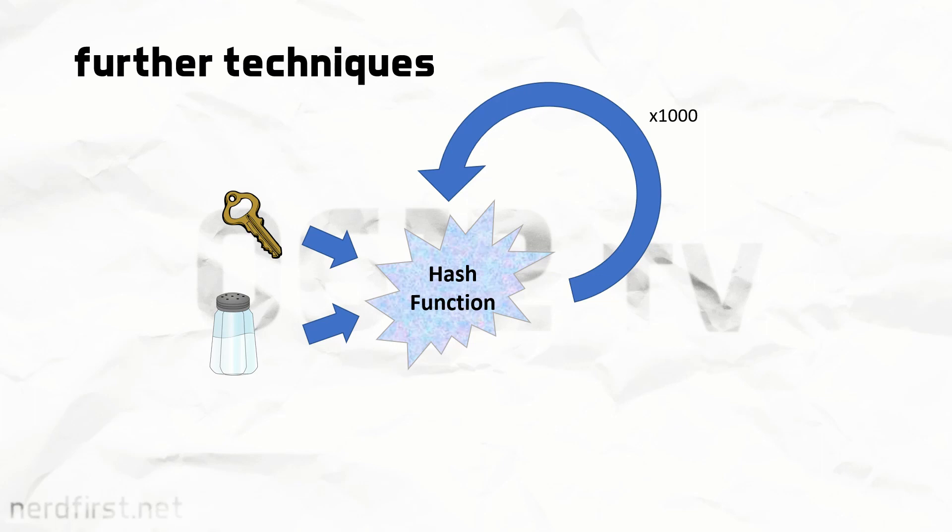The purpose of this is to make things computationally expensive for the attacker. When it's just one person logging in, well, we've got to do 1,000 steps here, but that's it, and this can be done fairly quickly.